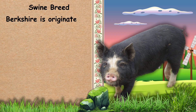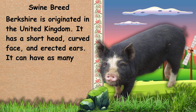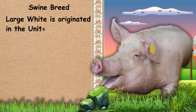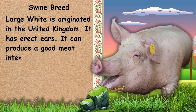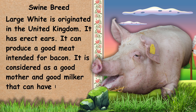Next, we have Berkshire. Berkshire originated in the United Kingdom. It has a short head, curved face, and erected ears. It can have as many as 9 litters and its meat is pork. Next, we have Large White. Large White originated in the United Kingdom. It has erect ears and can produce good meat intended for bacon. It is considered a good mother and good milker that can have litter as much as 11.